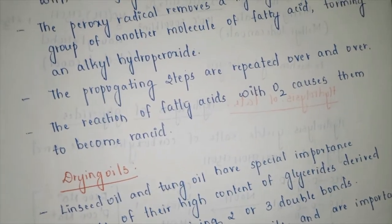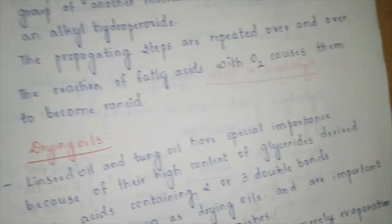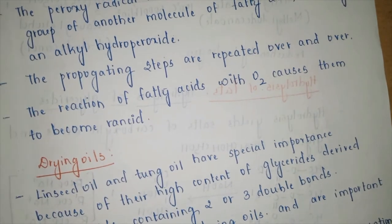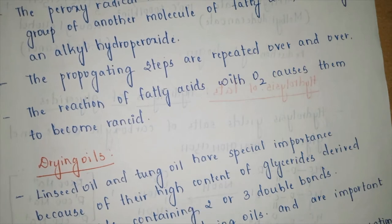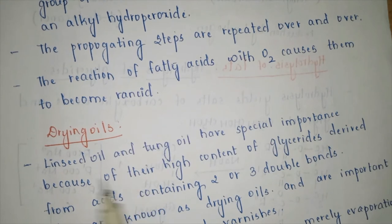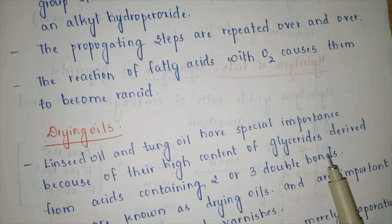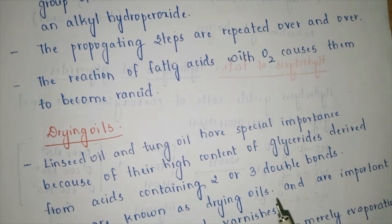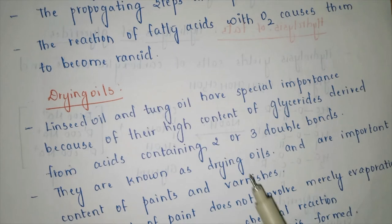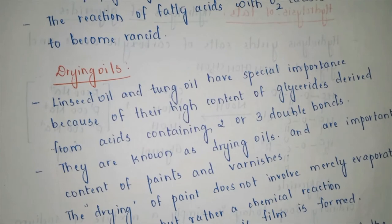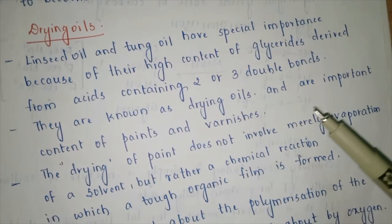The next concept is drying oils, which are important for varnishes and paints. Varnish on furniture and paint on walls need to dry properly and form a coating layer through a chemical reaction. Examples of drying oils are linseed oil and tung oil, which are important because of their high content of glycerides derived from acids containing two or three double bonds. These are important in the paint and varnish industries.